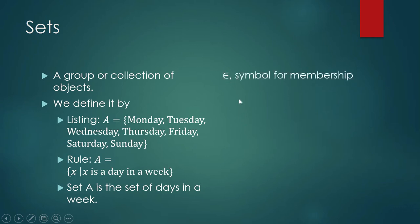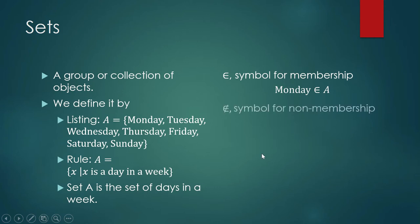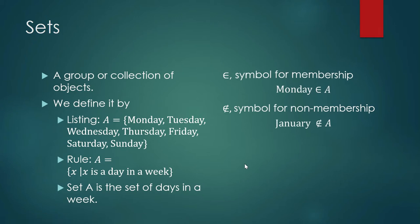E is a symbol for membership. Monday, for example, is an element of set A. E with a dash or with a cross is a symbol for non-membership. January, for example, is not an element of A because January is not among the days in a week.